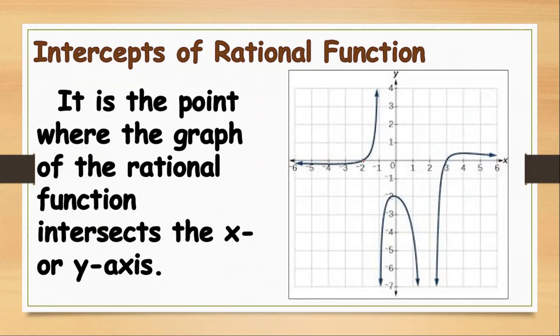Just take a look at this graph. This one is the intersection of the graph and the x-axis. This one also is the intersection of this graph and the x-axis. And this one is the intersection of this line and the y-axis. They are called intercepts.